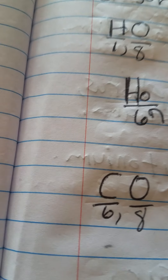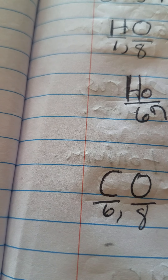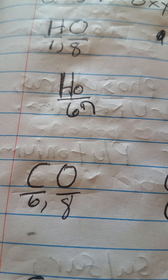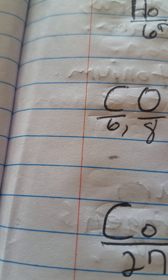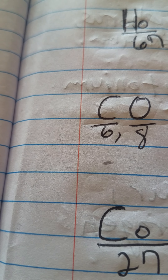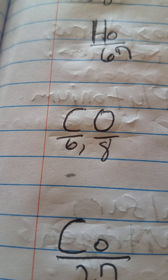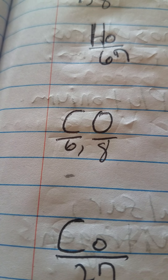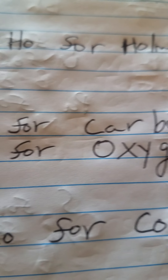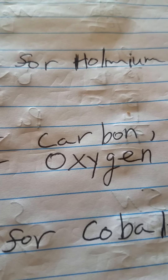Another example: capital C for carbon and capital O for oxygen. The atomic number for carbon is 6 and the atomic number for oxygen is 8. Carbon has the chemical symbol of capital C, and oxygen has capital O.